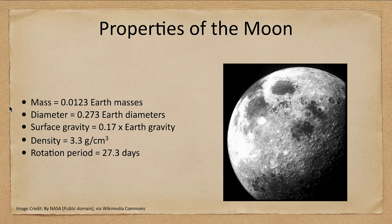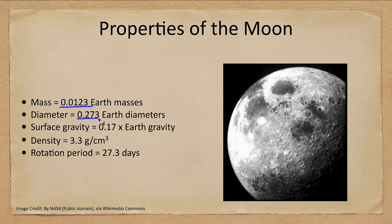We tend to give these numbers relative to Earth in many cases because it makes them more comprehensible. The mass of the moon is 0.0123 Earth masses — a little over 1/100 the mass of Earth, so not very much. The diameter is a little over a quarter of Earth's diameter, so if you put four moons side by side touching each other, those would stretch across the diameter of Earth.